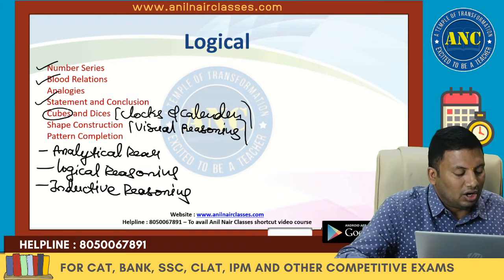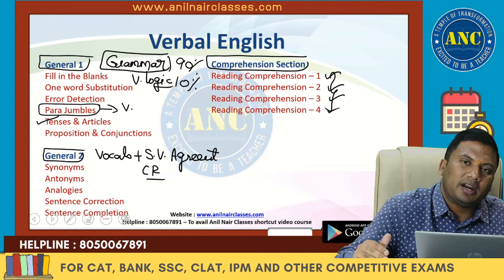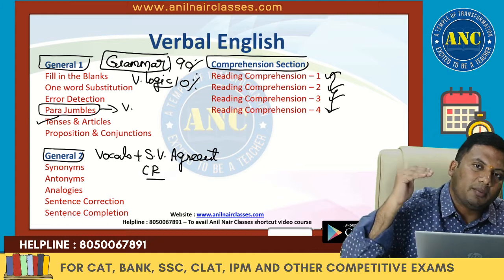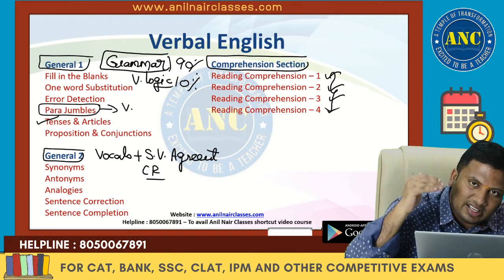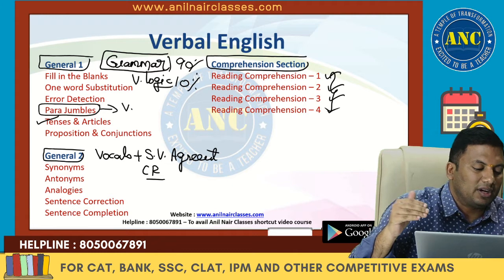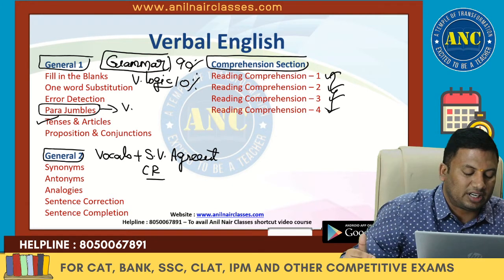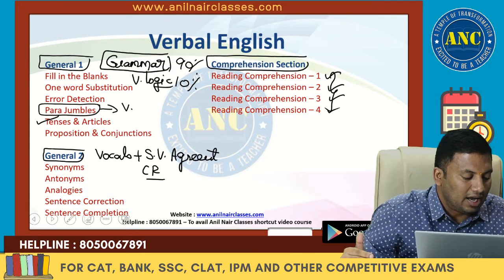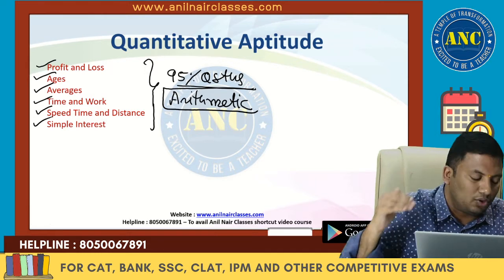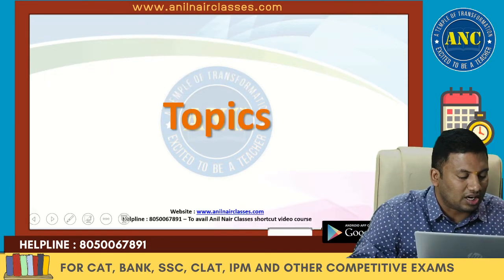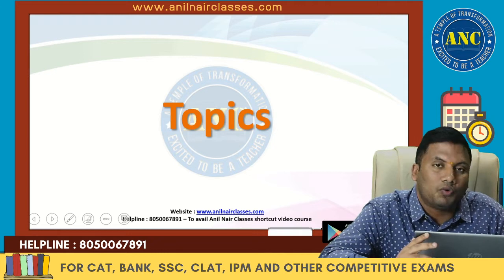To recap: grammar and verbal logic are in English General 1; vocabulary, subject-verb agreement, and critical reasoning are in English General 2; there is also a comprehension section. In quantitative aptitude, almost all questions are from arithmetic.